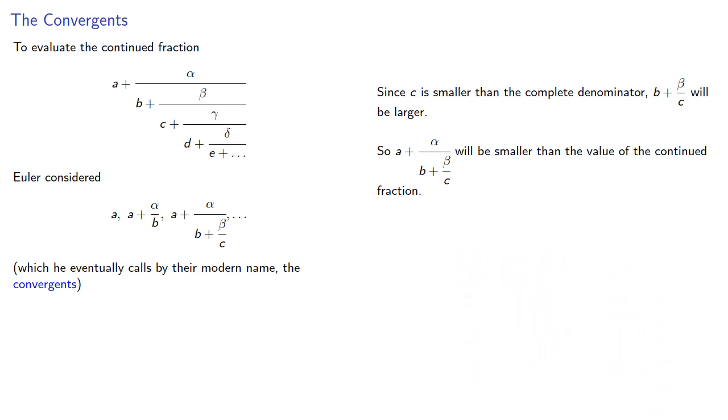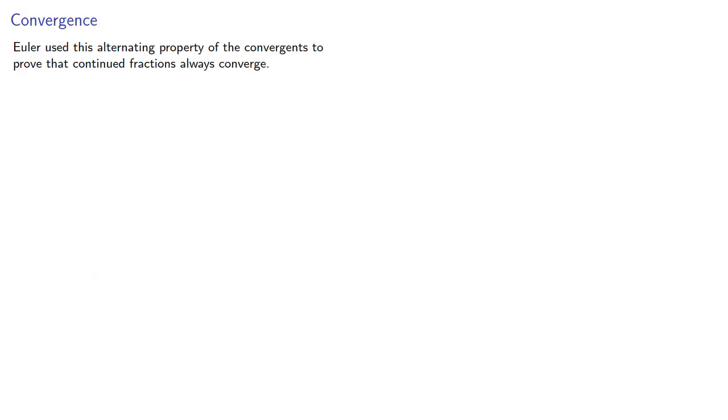And so in general, the convergents will alternate between being greater than the value of the continued fraction and less than the value of the continued fraction. Euler used this alternating property of the convergents to prove that continued fractions always converge.